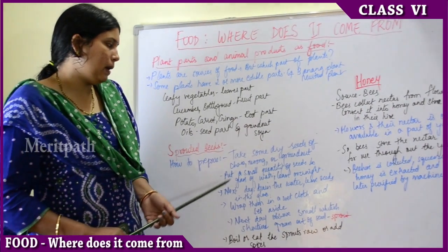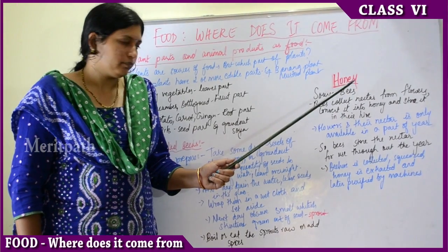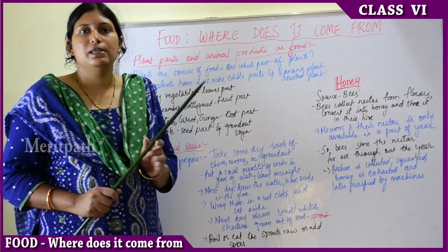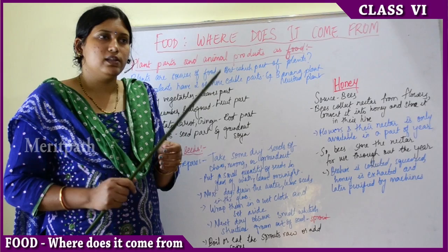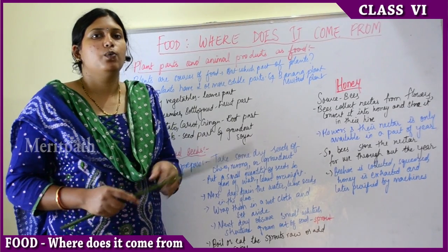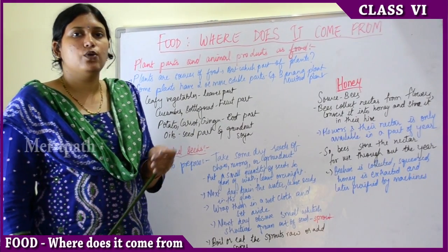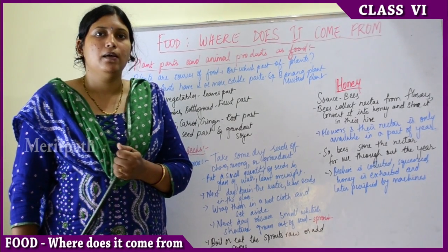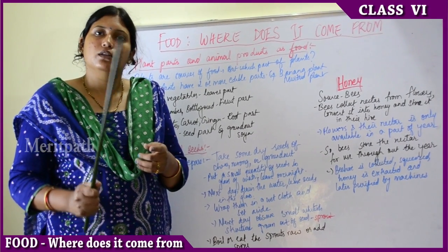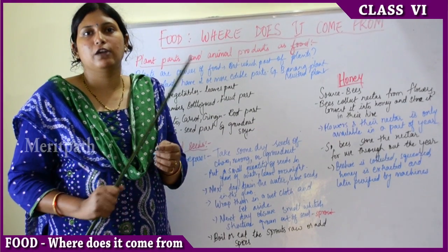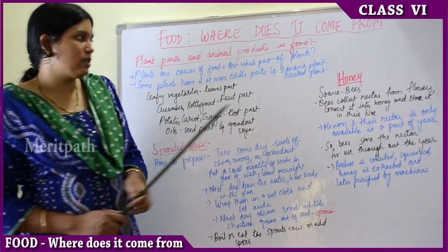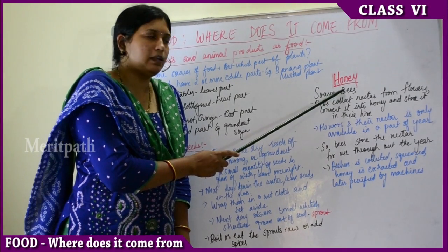Moving on to honey — the source is definitely an animal: the honeybee. On trees, apartment walls, and many trees we see big brownish irregularly shaped structures where honeybees reside — those are called beehives. Honeybees are dangerous; if you throw a stone at the beehive, they will immediately attack you. So you should never try to harm or hurt honeybees. The source of honey is the honeybee.